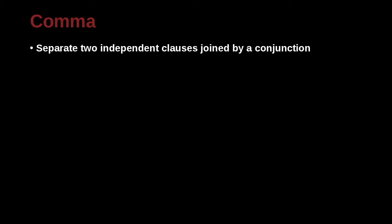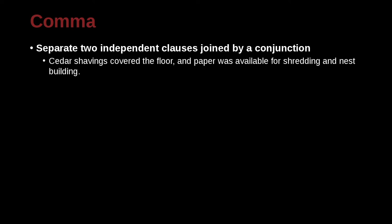You use a comma to separate two independent clauses that are conjoined by a conjunction. This is a really important idea and easy to get confused. Let's look at an example: 'Cedar shavings covered the floor, and paper was available for shredding and nest building.' This is talking about some kind of animal. Our comma is here, and this word 'and' is a conjunction.